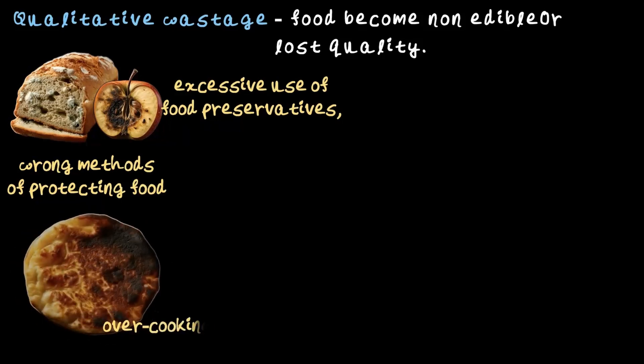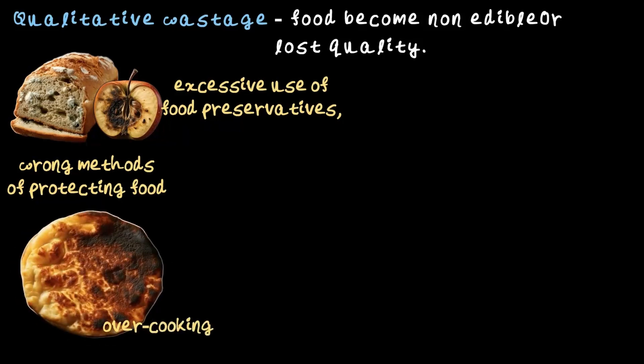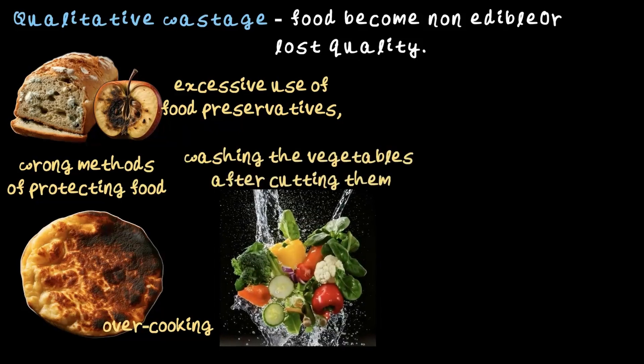Another big one, and the most obvious, is overcooking. Once food is burned or overcooked it's pretty much ruined — definitely not something you want to eat, like this roti here. And here is something that might surprise you: washing vegetables after cutting them is not good. It might seem harmless but doing this washes away most of the nutrients. Sure, it won't harm you to eat it, but the food loses its main purpose — to give us nutrients.